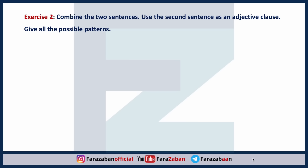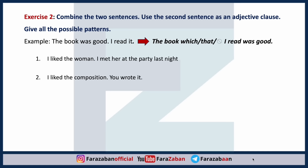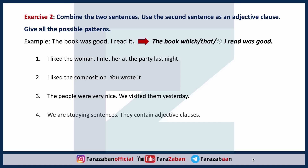Exercise two — combine the two sentences. Use the second sentence as an adjective clause. Give all the possible patterns. For example: the book was good / I read it → the book which, that, or blank I read was good. Sentence one: I like the woman — I met her at the party last night. Two: I like the composition — you wrote it. Three: the people were very nice — we visited them yesterday. Four: we are studying sentences — they contain adjective clauses. Five: the man is standing over there — Ann brought him to the party.